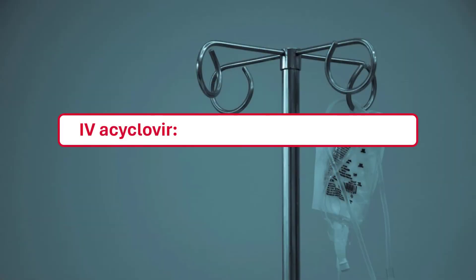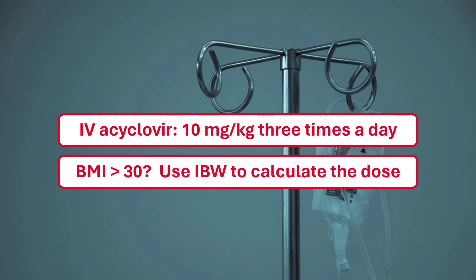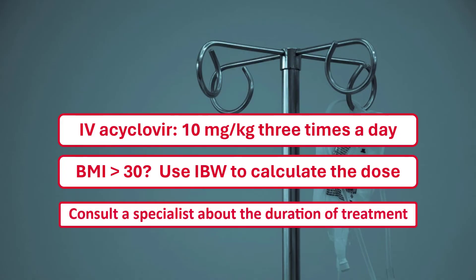For severe infections — herpes simplex encephalitis, varicella zoster encephalitis, disseminated zoster — the dose is 10 mg per kg administered 3 times a day. If your patient's BMI is over 30, make sure you use ideal body weight, not actual body weight, to calculate the dose.